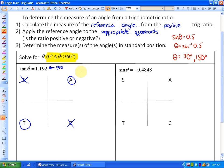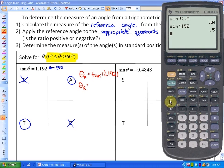The next thing we want to do is figure out the reference angle. And the reference angle will be the tan inverse of 1.192. So the reference angle would be 50 degrees.